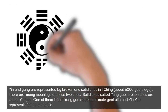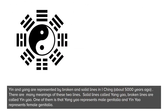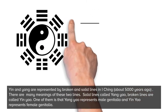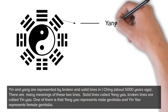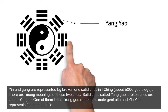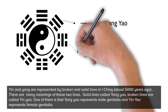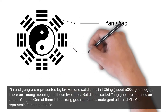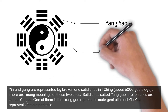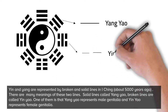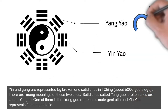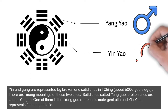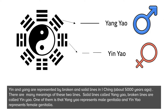Yin and yang are represented by broken and solid lines in the I Ching, about 5,000 years ago. There are many meanings of these two lines: solid lines are called yang-yao, and broken lines are called yin-yao. One meaning is that yang-yao represents male genitalia and yin-yao represents female genitalia.